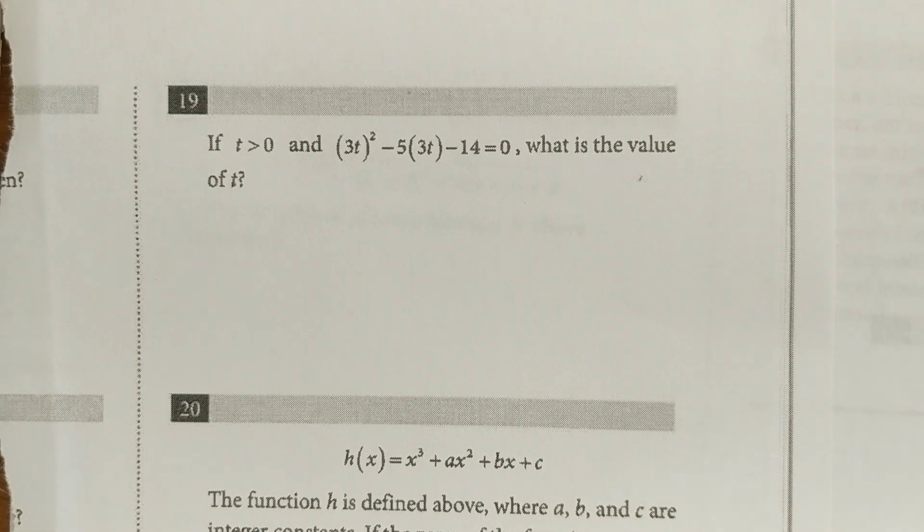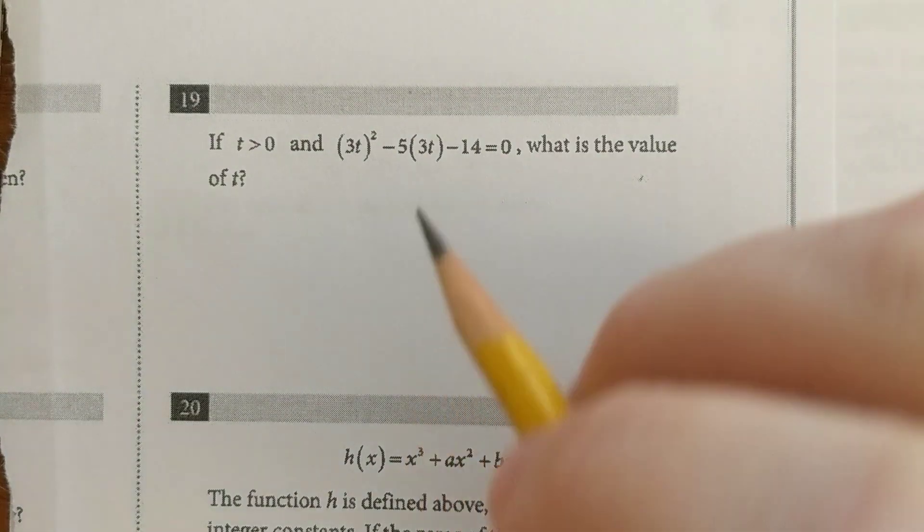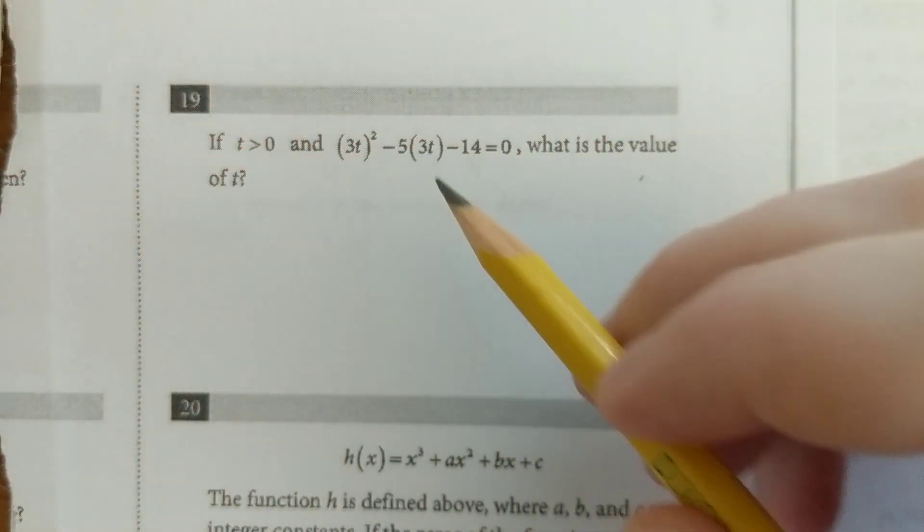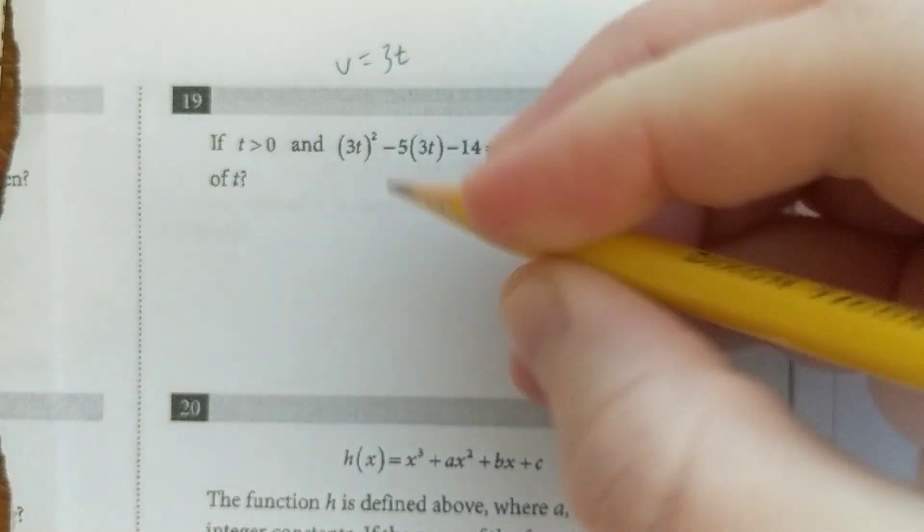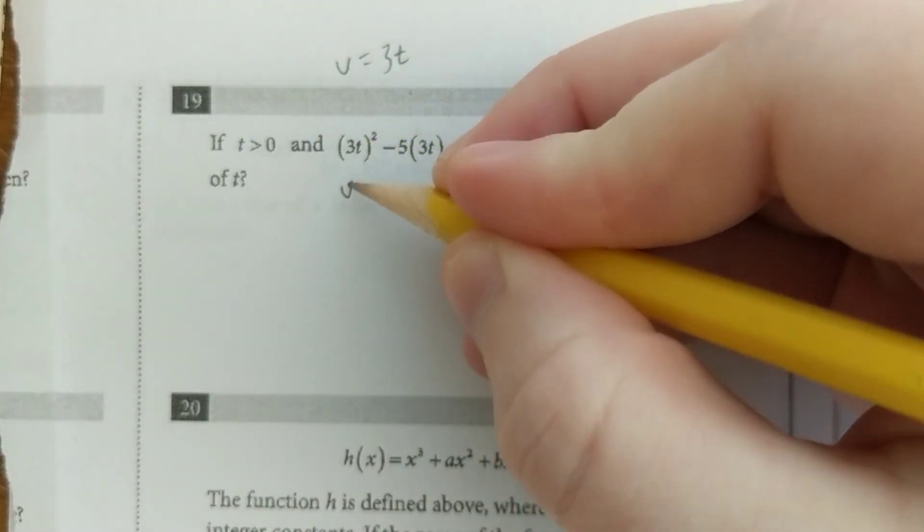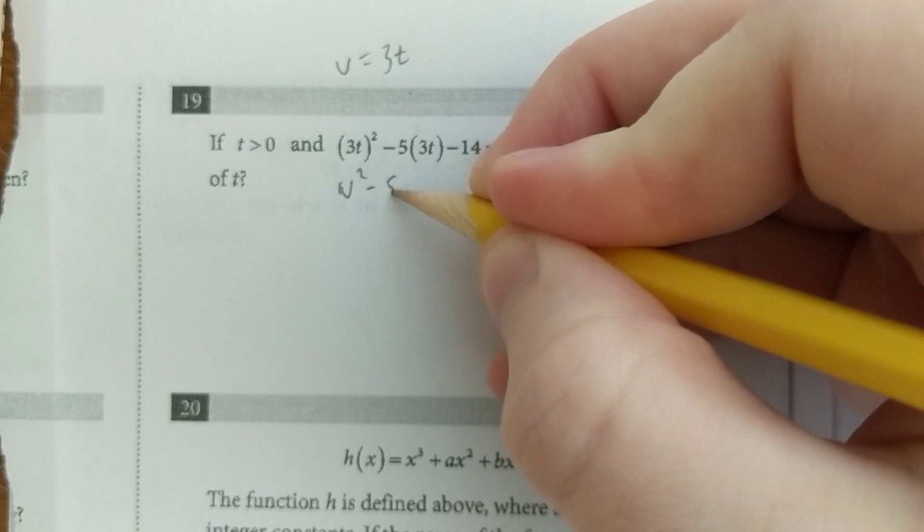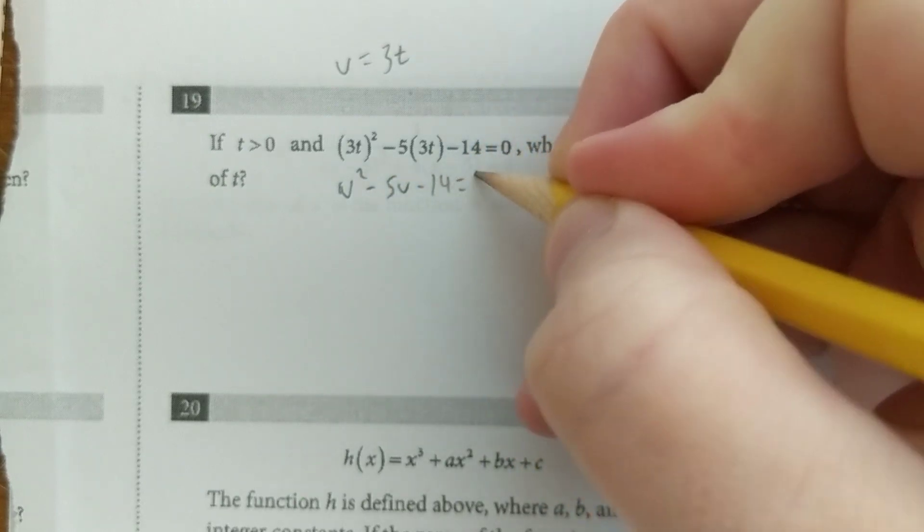If you see terms repeating in a quadratic equation, you should consider using u-substitution. So here you can see the 3t repeating. We're going to say that u equals 3t, and then we're going to rewrite that equation. So u squared minus 5u minus 14 equals 0.